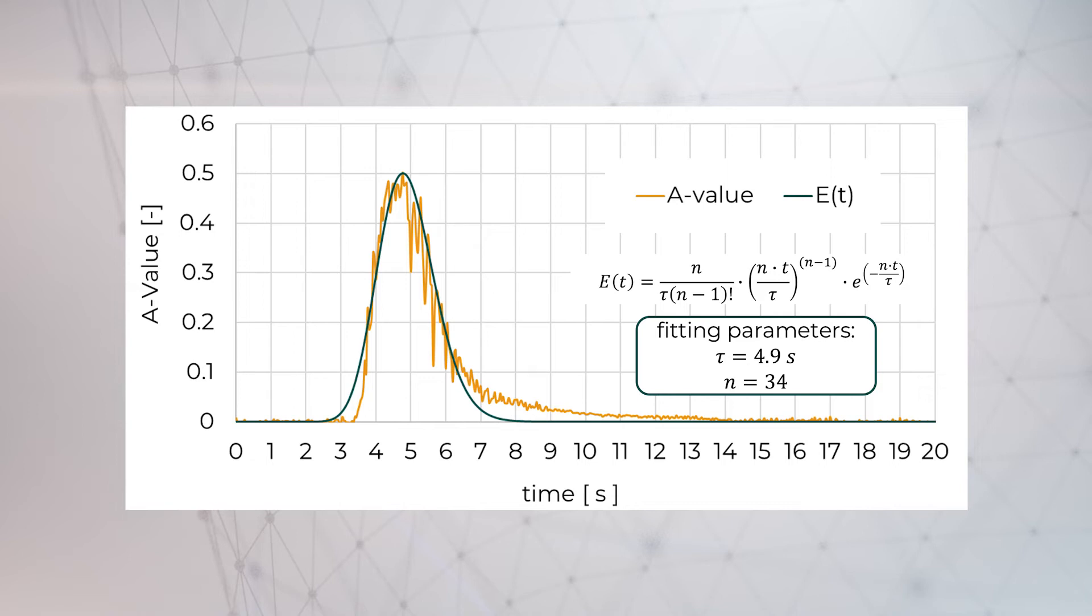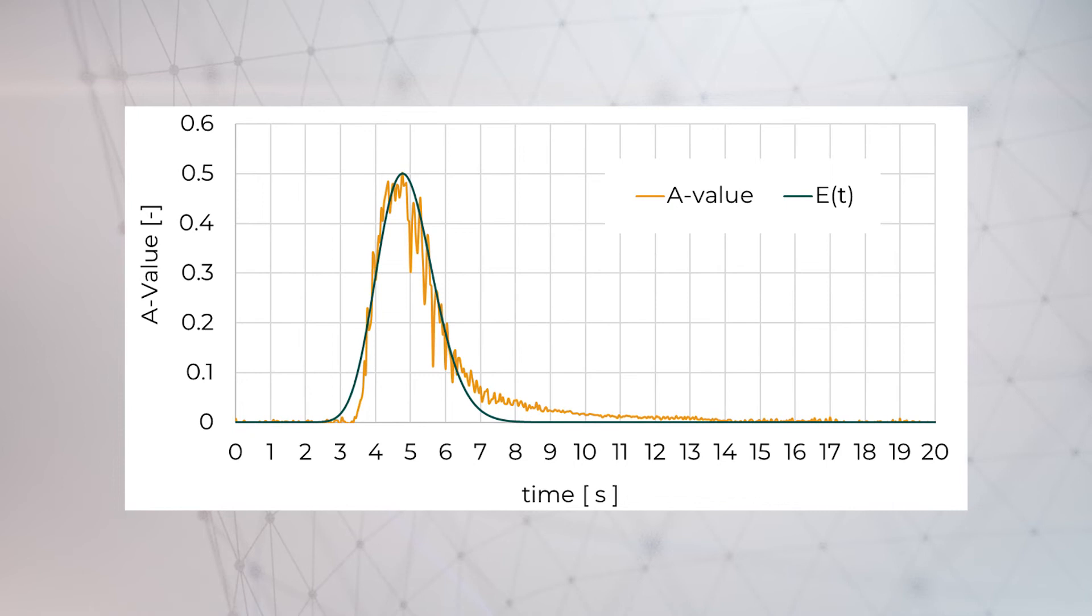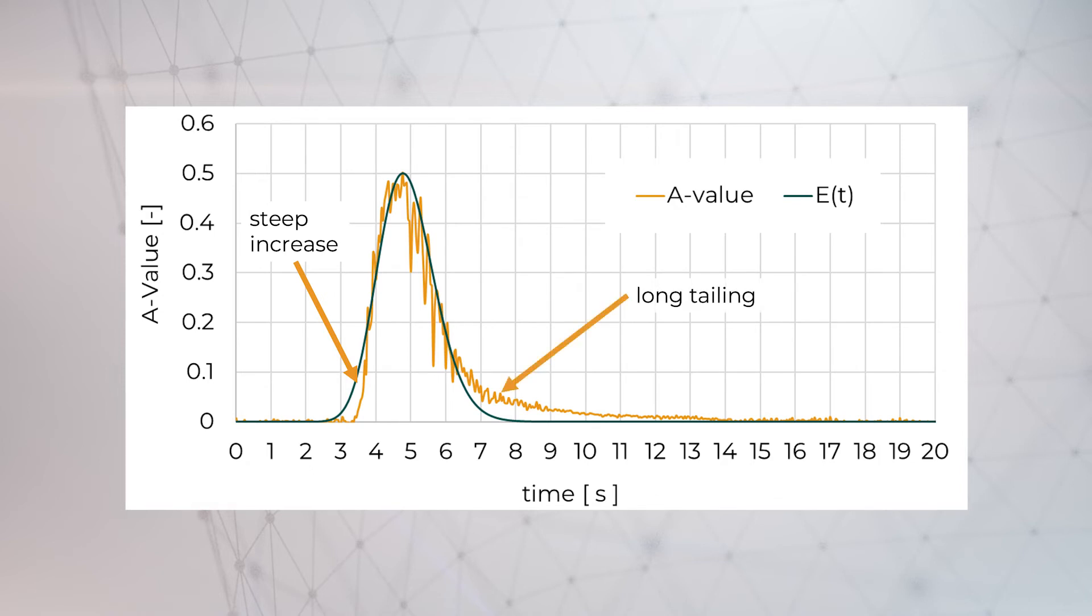Tau is the mean residence time and n is the number of tanks in the cascade. The fit is quite good, but you can also see that we have a steep increase in the beginning and a long tail in the end, which is not represented well by the fit.